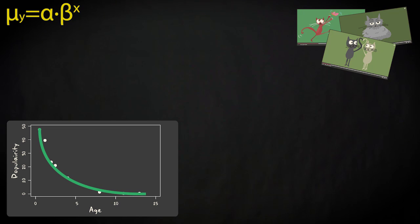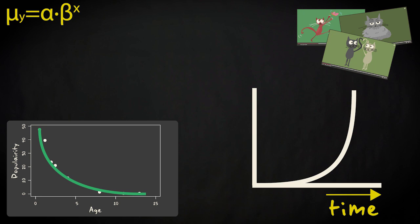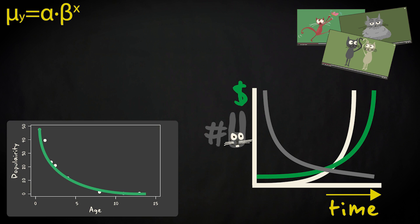Exponential models are useful to describe growth rates over time, such as interest rates in finances or, for example, growth or decline of animal populations in biology. Because in many of these cases the predictor is time, the symbol x is sometimes substituted with the symbol t. But we'll stick with x here.